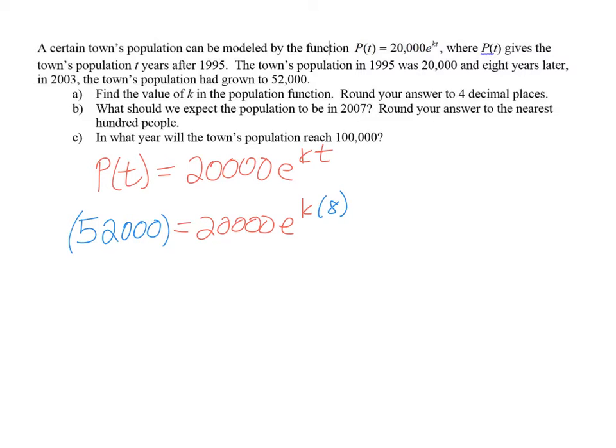We need to solve this exponential equation for k. To do that, we first isolate e to the 8k power by dividing by 20,000 on both sides. We'll simplify this fraction at the same time. When we do that, we get 13 over 5 equals e to the 8k power.